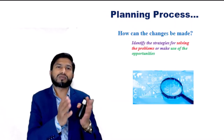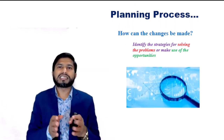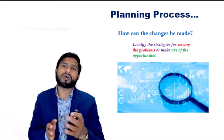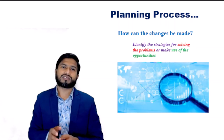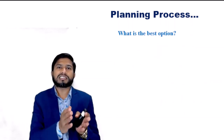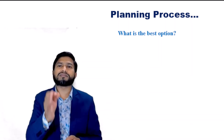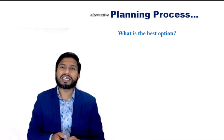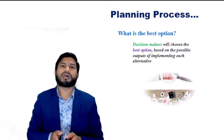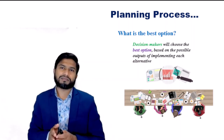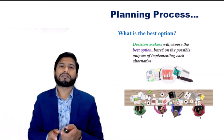For this, the planner seeks a range of ways to make use of the opportunities and solve the problems. In many cases, it is not less than three alternative options. People's participation will end after discussions. After that, they will present the selected options of planning to the decision makers and ask them what is the best option. Decision makers will choose the best options based on the possible output of implementing each alternative. So planning is done but needs to implement the selected plan.